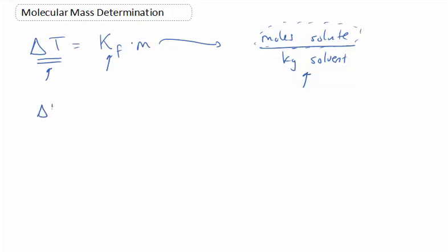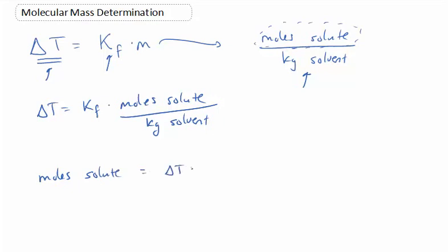So the change in temperature is equal to the Kf times the moles of solute, which is what we want to find, divided by the kilograms of solvent. So if we rearrange that, we get the moles of solute is equal to the change in temperature times the mass of the solvent in kilograms, divided by this Kf. Fantastic.